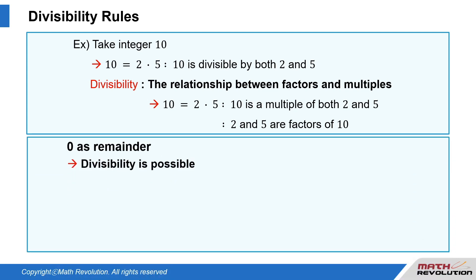Also, 0 as the remainder shows that divisibility is possible. If m and n are positive integers and the remainder is 0 when n is divided by m, then n is divisible by m.